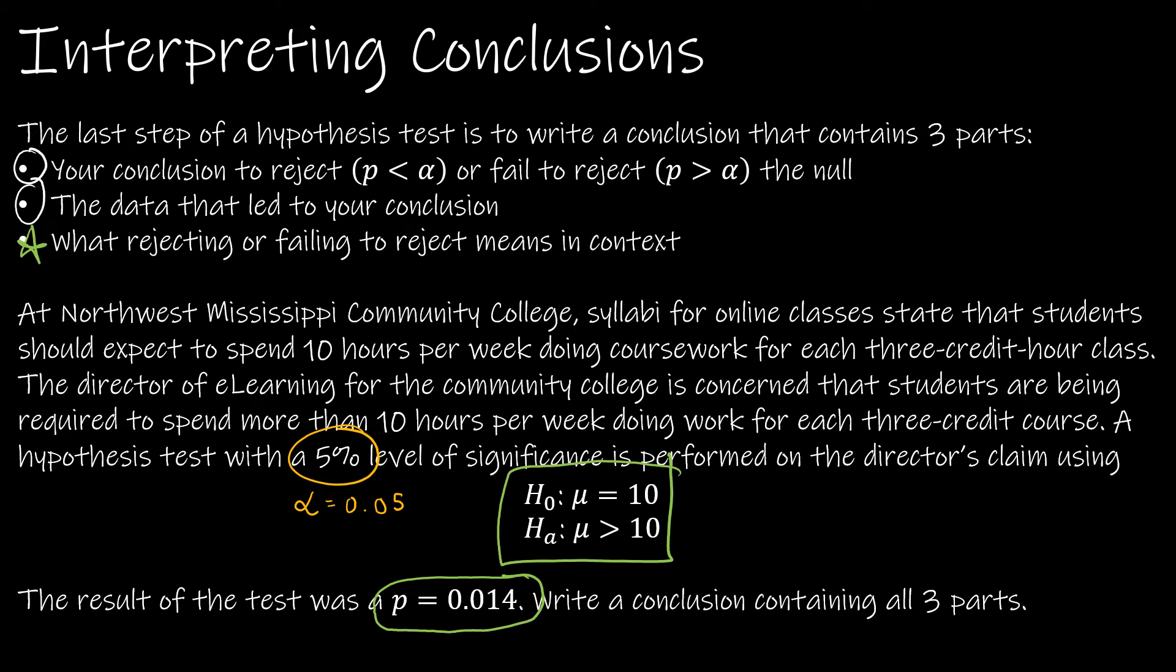We're looking at a 5% level of significance, which means alpha is 0.05. Before we go to the next slide that has the conclusion on it, let's take a look at what we should be looking at. We have a p-value of 0.014, which is less than alpha of 0.05. Therefore, I should be rejecting the null hypothesis.